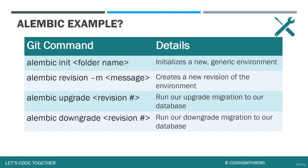If we mess up, we can always abort the mission. Alembic comes with a downgrade command to undo the change we made beforehand. So with every upgrade there's also a downgrade, so we can modify our database appropriately.